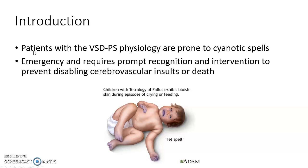Cyanotic spells are common in patients with tetralogy of Fallot. Patients with ventricular septal defect and pulmonary stenosis physiology are prone to cyanotic spells. This VSD and pulmonary stenosis physiology is seen in patients with tetralogy of Fallot.